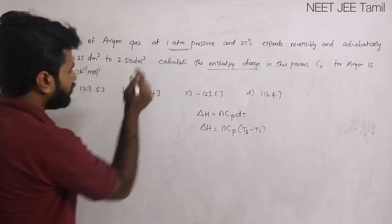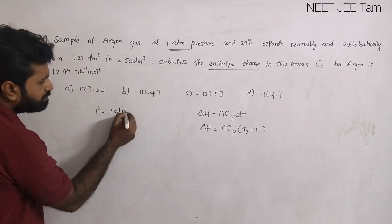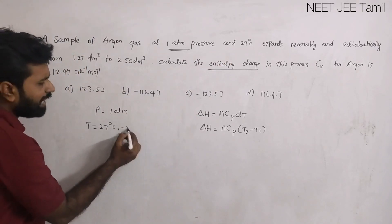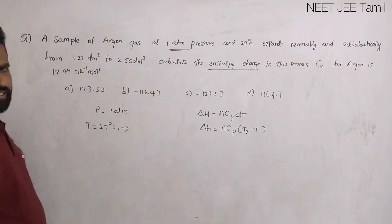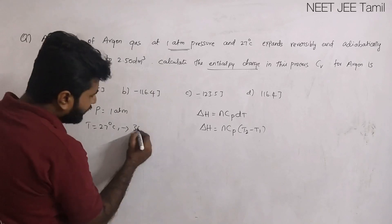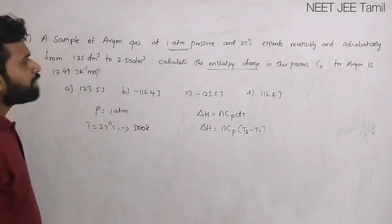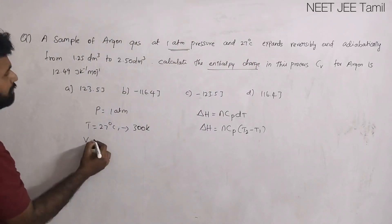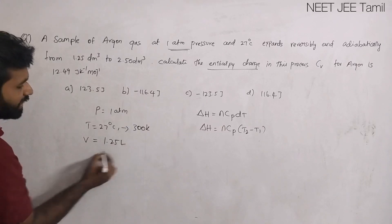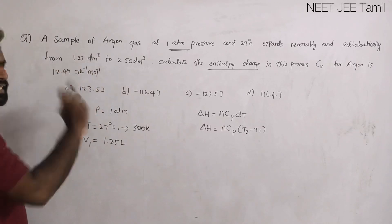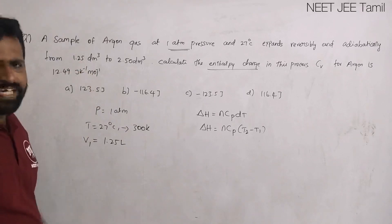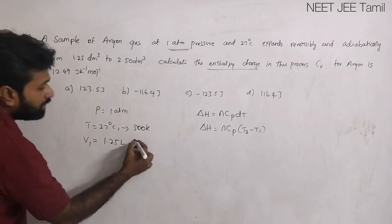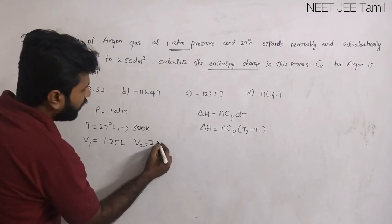What are the given data? Pressure is 1 atm. Temperature is 27 degrees C, which in Kelvin is 273 plus 27 equals 300 Kelvin. The volume is expanding — initial volume V1 is 1.25 litre, and since 1 litre equals 1 dm³, V2 is equal to 2.50 litre.